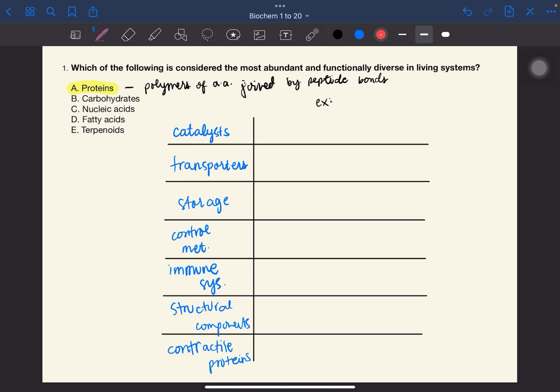Respective examples are enzymes. For transporters, hemoglobin and myoglobin. Storage, ferritin. Control metabolism, hormones, polypeptide hormones such as insulin, glucagon, thyroid hormones. Immune system, immunoglobulins. Structural components, collagen and elastin are examples. And for contractile proteins, actin and myosin, the ones in the muscle.